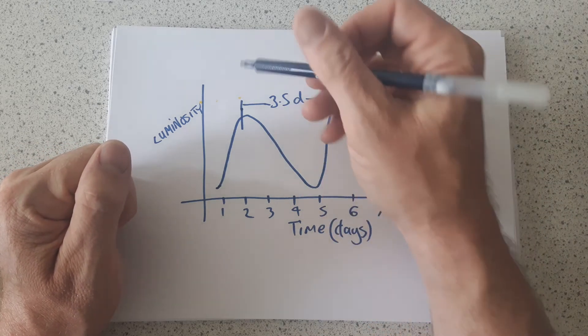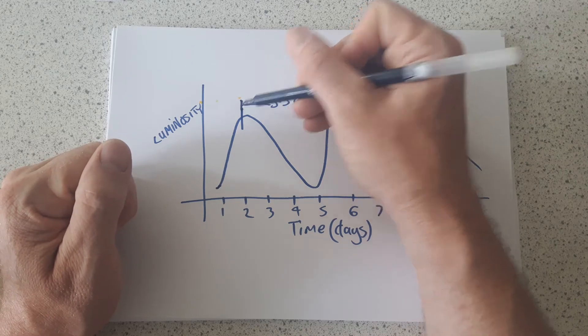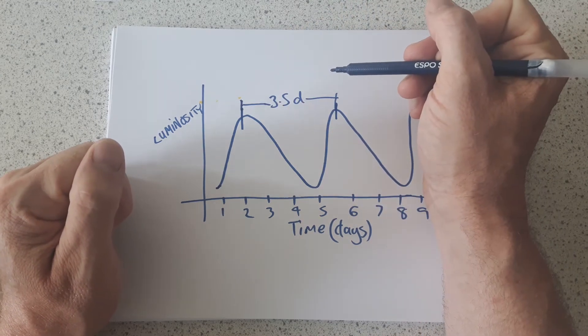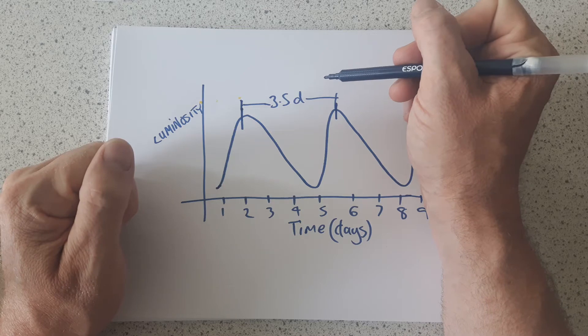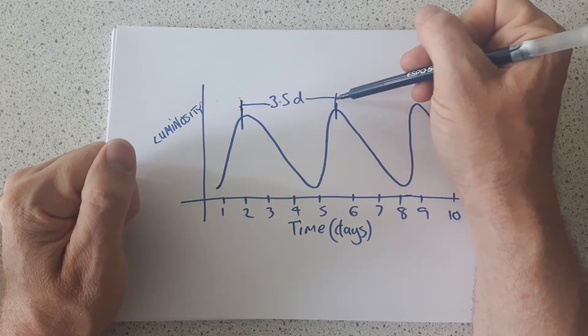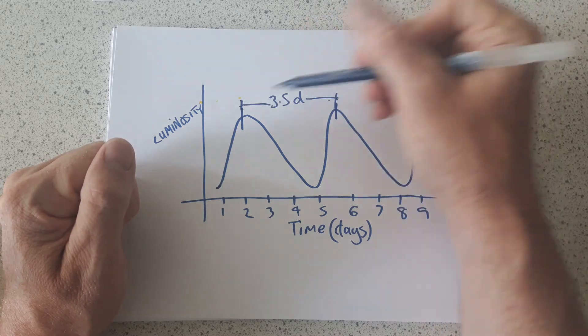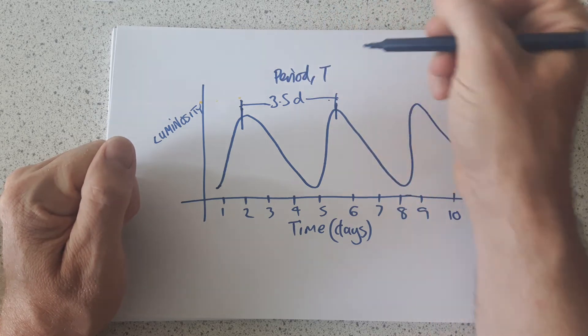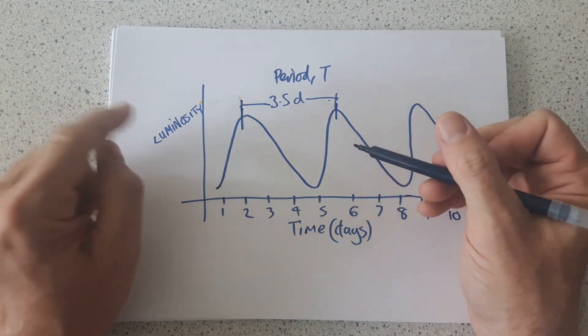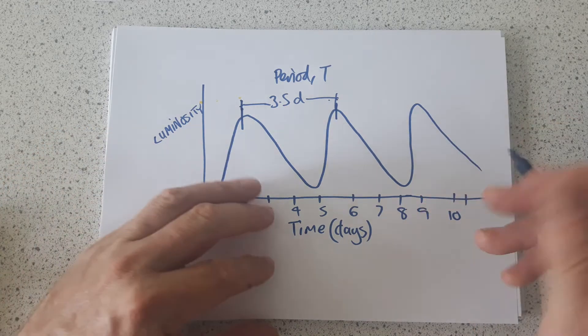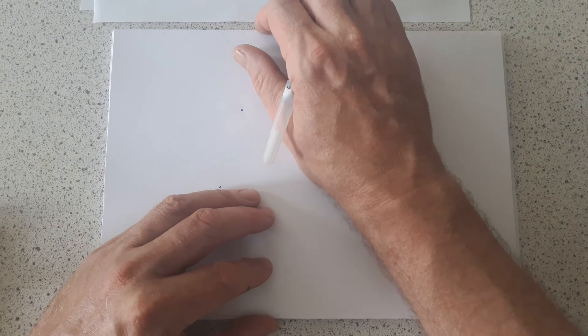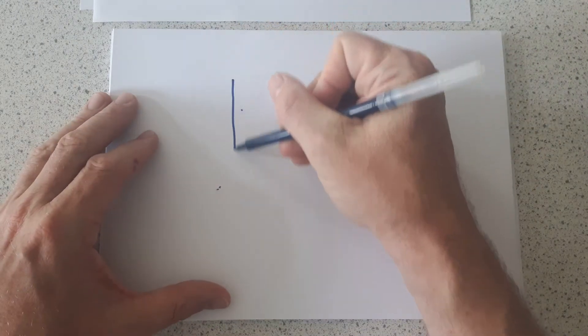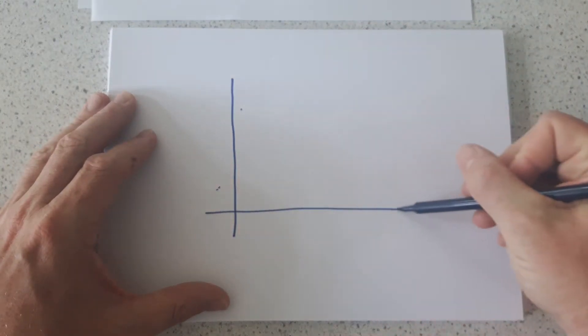So what Henrietta Leavitt noticed was that there was a relationship between how long it took the stars to brighten and dim. So their period of brightening and dimming versus their luminosity. And what she began to do was to catalogue the stars, which she knew all the same distance away, and produced a very famous piece of data.